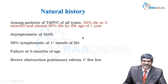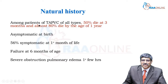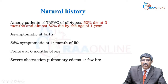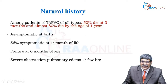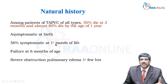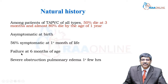Coming to the natural history: among patients of TAPVC, 50% if uncorrected die at three months, and almost 80% die by end of one year. It is asymptomatic at birth, but more than 50% become symptomatic at the first month of life, and congestive cardiac failure develops at six months of age.